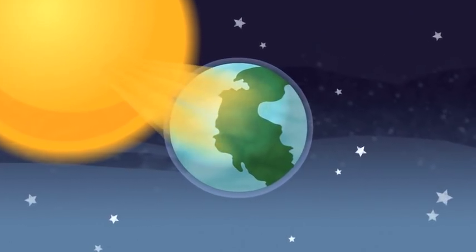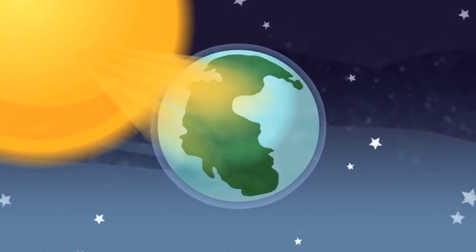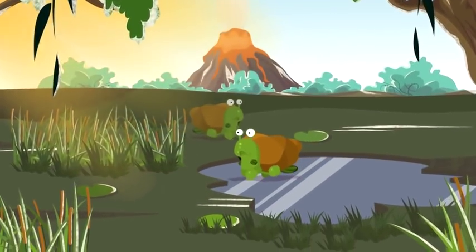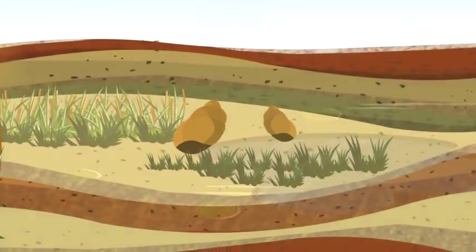Many millions of years ago, even before the age of dinosaurs, ancient plants and organisms lived in swamps. As they died, they were covered by layers of mud, sand and other materials.